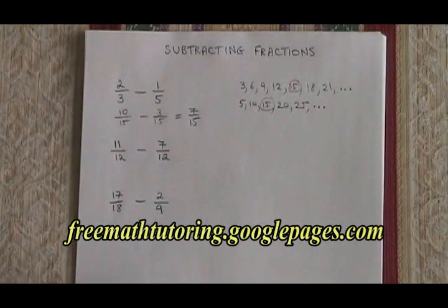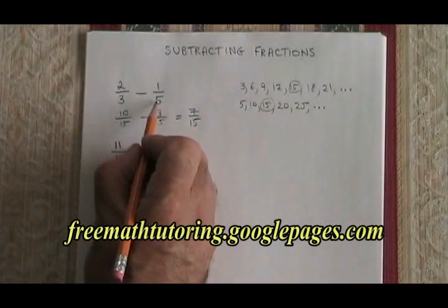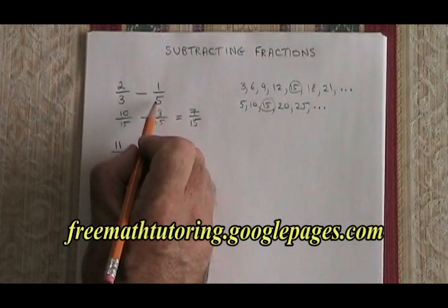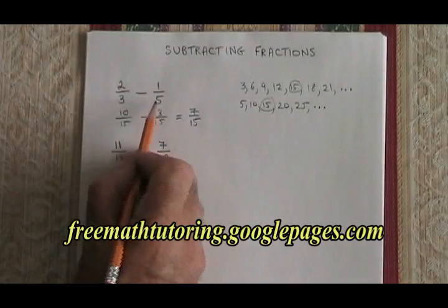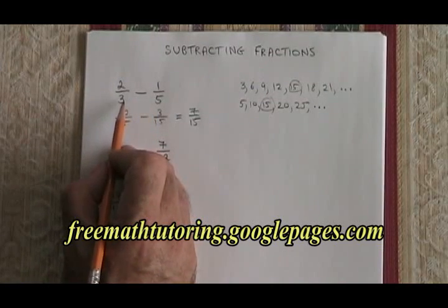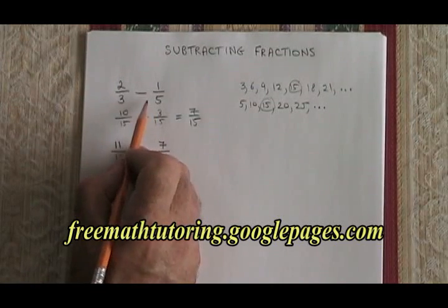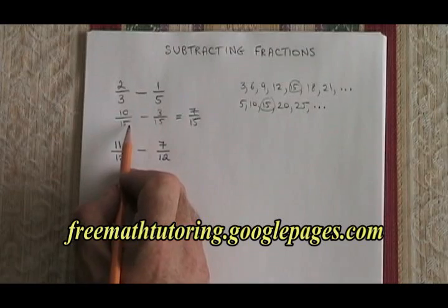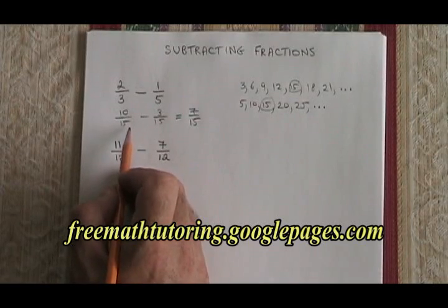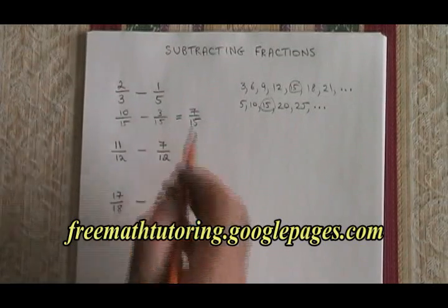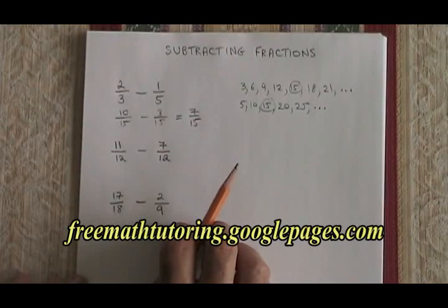Of course, there is a shortcut. 3 times 5 is 15. So we can get a common denominator simply by multiplying the 3 and the 5. If we multiply the denominators of our starting fractions, we get a common denominator. But it's not always going to be the lowest common denominator. So let's see a few more examples and see how that plays out.